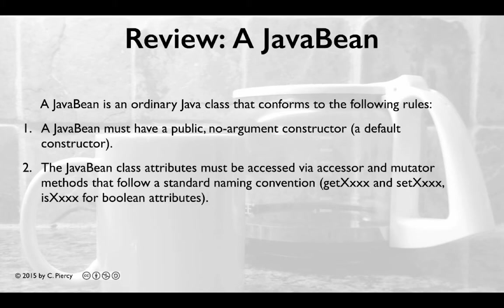The Java bean class attributes must be accessed via accessor and mutator methods that follow a standard naming convention. The Java bean class should implement the serializable interface.